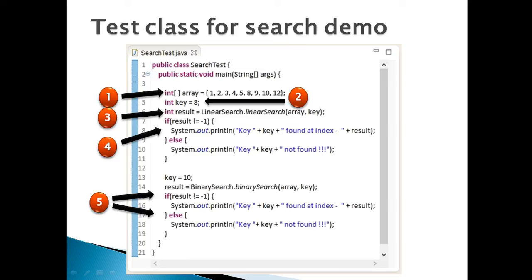Step 5: Perform steps with a different key with binary search method. In our case, 10 is there in array, so result will not be equal to minus 1. Hence, below if check comes out to be true and index of found key is printed on the console.